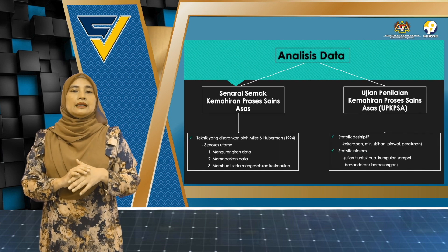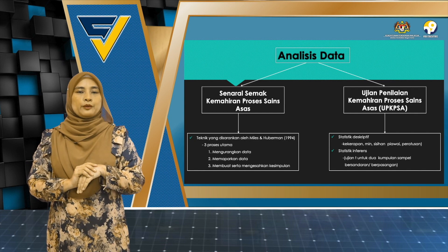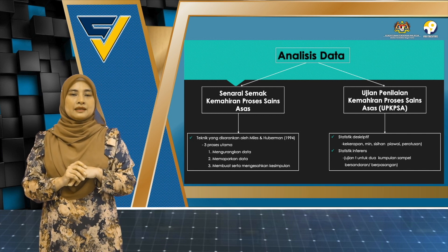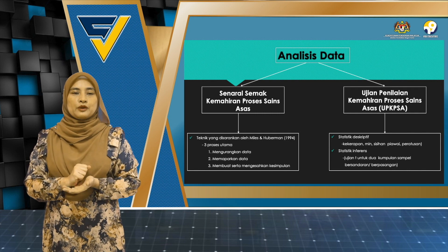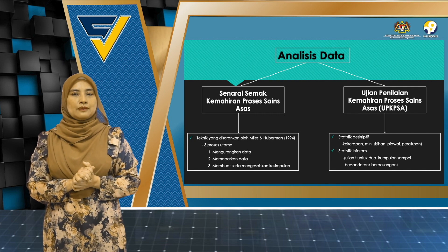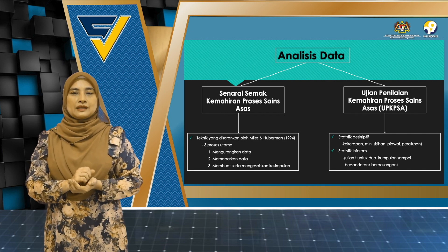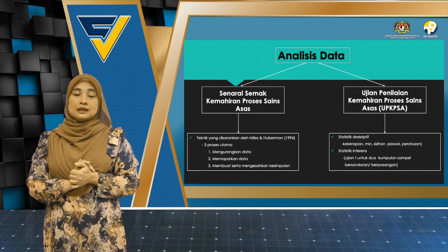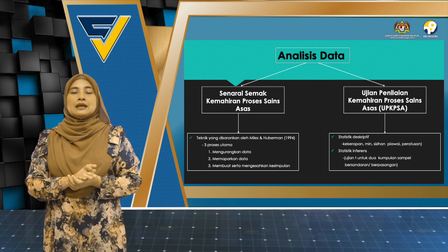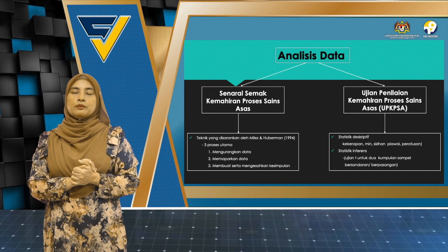Data dianalisis dengan menggunakan dua kaedah. Di mana untuk senarai semak kemahiran proses sains asas, kaedah analisisnya adalah menggunakan teknik yang disarankan oleh Miles and Huberman, yang mempunyai tiga proses utama iaitu mengurangkan data, memaparkan data dan membuat serta mengesahkan kesimpulan. Manakala untuk instrumen ujian penilaian kemahiran proses sains asas, data ini dianalisis menggunakan statistik deskriptif iaitu kekerapan, min, sisihan piawai dan juga peratusan, serta menggunakan statistik inferens iaitu ujian-T untuk dua kumpulan sampel bersandar atau berpasangan.